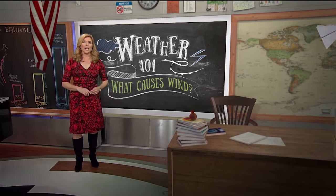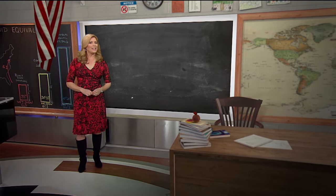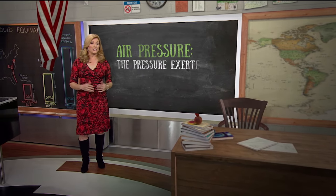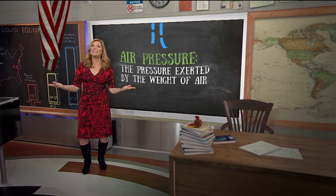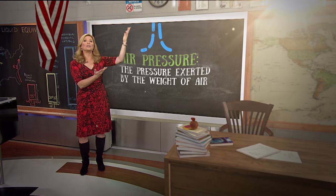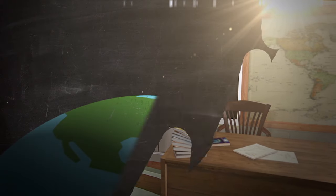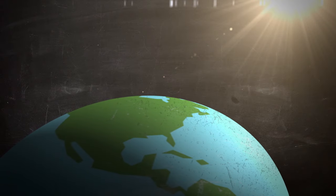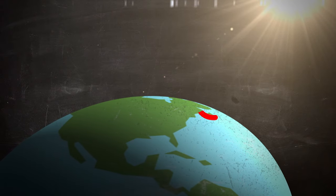It all comes down to the difference in air pressure, which is the pressure exerted by the weight of the air. It starts with the sun. The sun heats the earth unevenly.